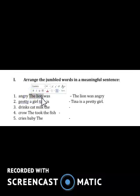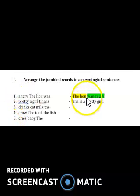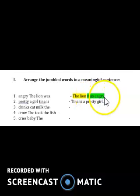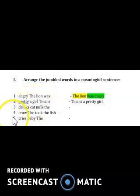The first two words are 'the lion,' and obviously what we say about the lion is 'was angry.' So 'the lion' is the naming part and 'was angry' is the telling part. Let's go for the second sentence: 'pretty a girl Tina.' I asked you to check for the capital letter — this word has a capital and it's a name, so it comes first: Tina.